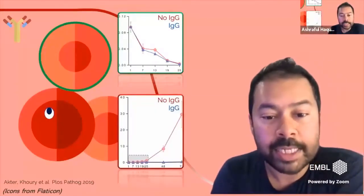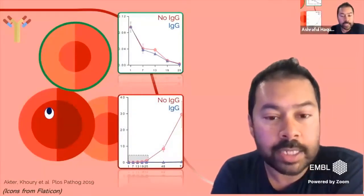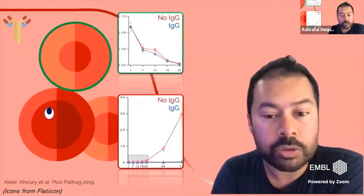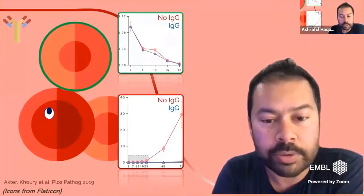But of course you can see that the IgG has a clear role in preventing new infections in the graph I'm showing you here on the left.